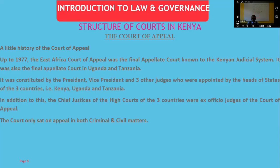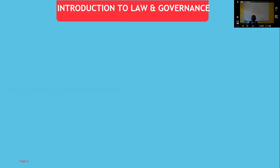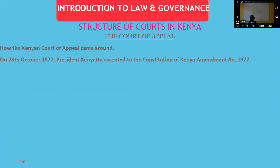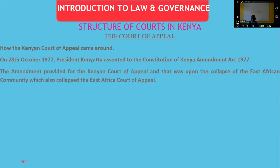The East Africa Court of Appeal only sat on appeal in both civil and criminal matters. The Kenyan Court of Appeal came about because on 28th October 1977, President Kenyatta assented to the Constitution of Kenya Amendment Act of 1977, which provided for the Kenyan Court of Appeal after the collapse of the East African Community and its Court of Appeal. If you look at case law citations, you'll see 'EACA' — that means the East Africa Court of Appeal decided those cases.